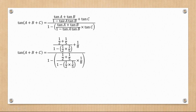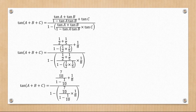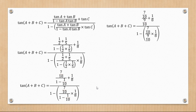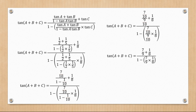Now substituting in all values — tan a equals one half, tan b equals one over five, tan c equals one over eight — the numerator of the inner fraction becomes seven over ten, and the product term gives one over ten. So one minus one over ten gives nine over ten in the denominator, and the same calculation gives nine over ten on the other side as well.